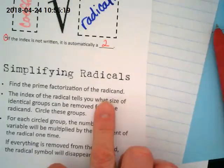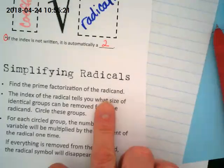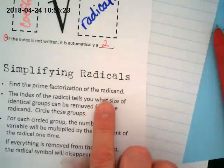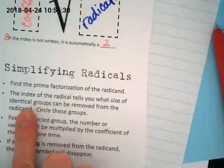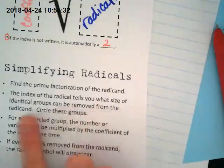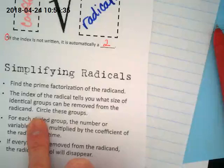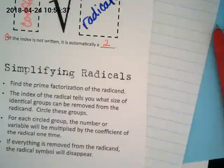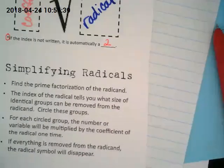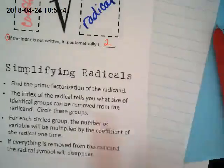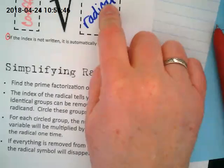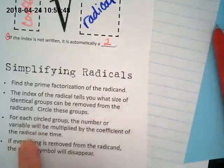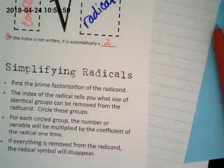Second step. The index of the radical tells you what size of identical groups can be removed from the radicand. That makes no sense to you right now, but we're going to come back to it and it will in a minute. We're basically pulling stuff out of here and getting it outside, but not everything can come out. So let me do the first one.